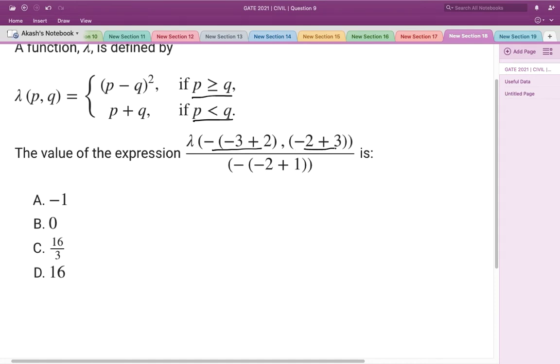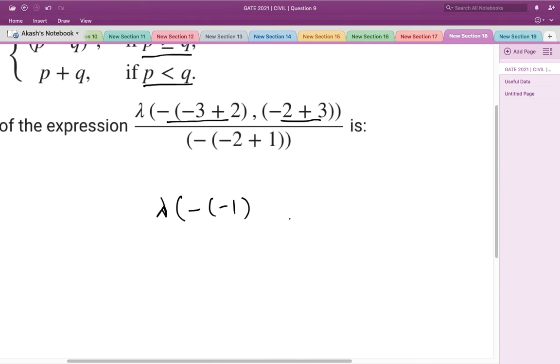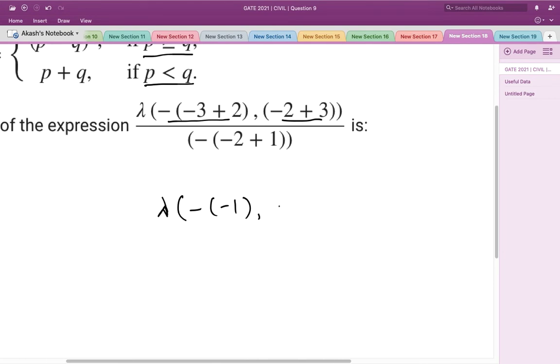Let's solve for λ with these two parameters. This would be λ of (-3+2), which equals -1. So this is the first argument. And -2+3 equals 1, this is the second argument.